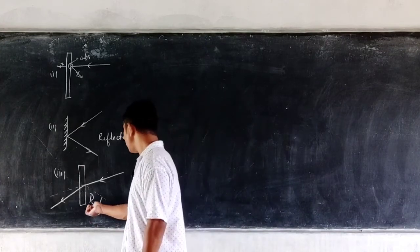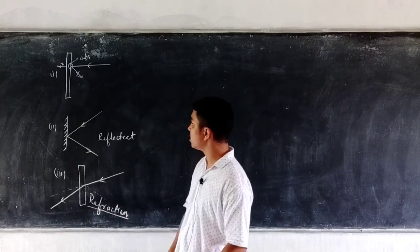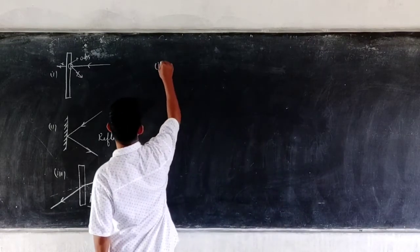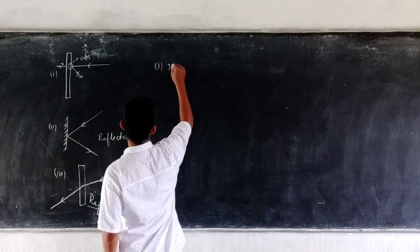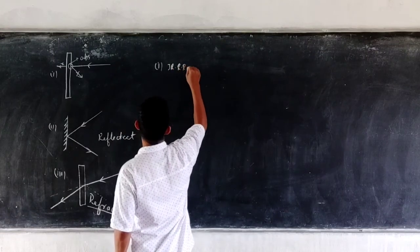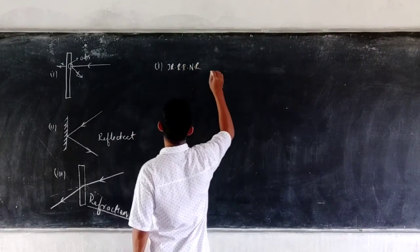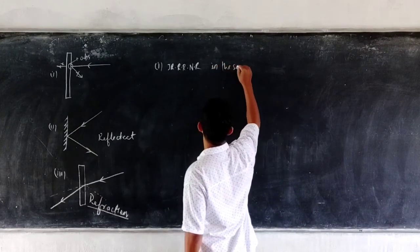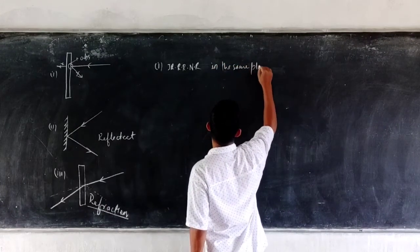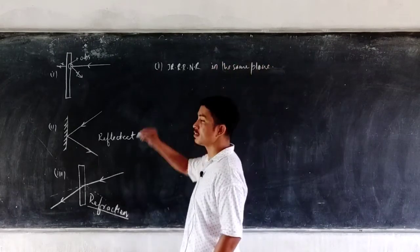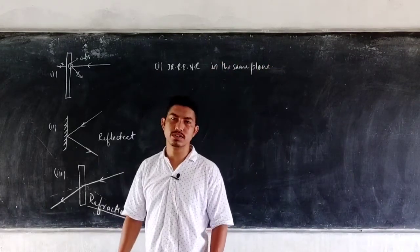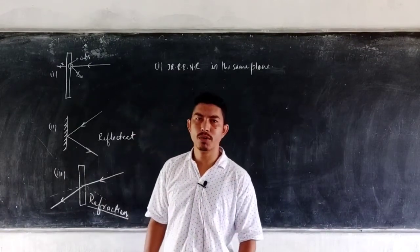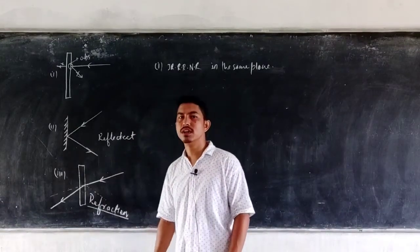Now after you know what refraction of light is, there are two laws of refraction. The first law of refraction tells that the incident ray, the refracted ray, and the normal ray all lie in the same plane — just like the first law of reflection. The incident ray, the refracted ray, and the normal at the point of incidence all lie in the same plane.